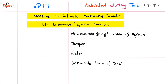PTT and ACT are very similar, with just a few differences. Similarities: both measure the intrinsic pathway mainly, and both can be used to monitor heparin therapy. However, ACT has some advantages — it's more accurate at high doses of heparin, it's cheaper because it's older, and it's faster. However, it's less sophisticated in most cases. PTT is better, with tiny exceptions: high doses of heparin, and when the patient is at the bedside, since ACT can be done bedside with fast results.